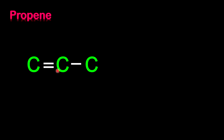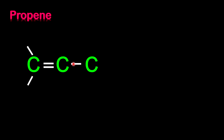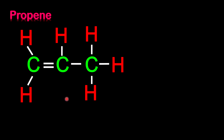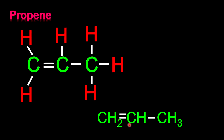Our next example is propene. The double bond is there; the first carbon gets 2 hydrogen. The middle carbon already has 3 lines — 2 from the double bond, 1 from the single bond to the third carbon — so it requires only 1 more line. The last carbon has 1 line, so it requires 3 more lines. We place our hydrogen atoms accordingly. With 3 carbons we should have 6 hydrogen atoms, and the condensed formula is CH2=CH-CH3.